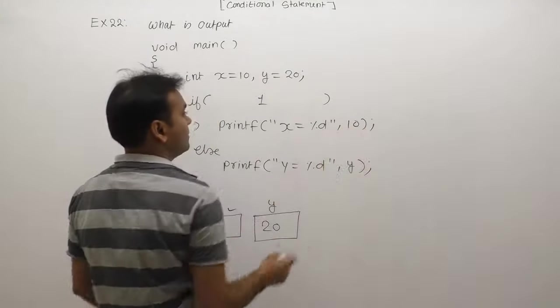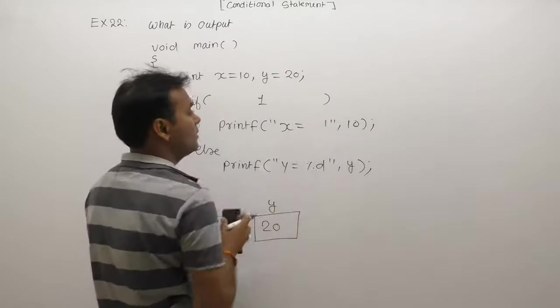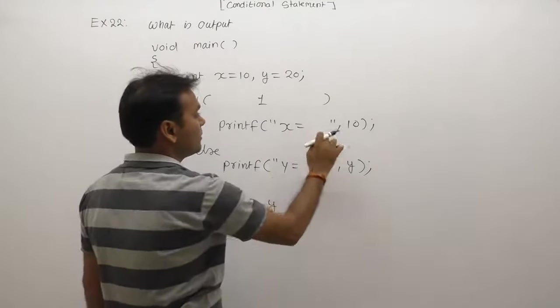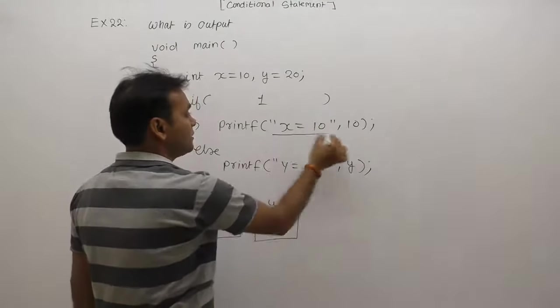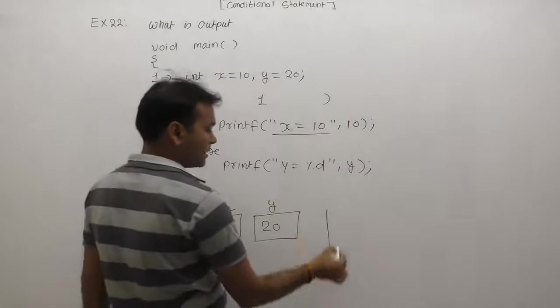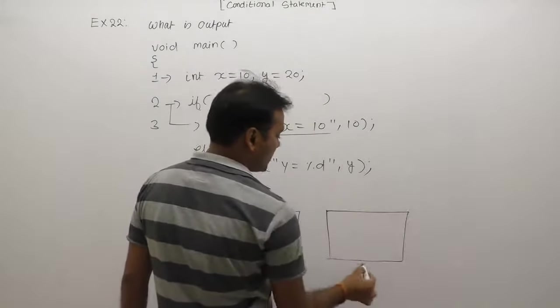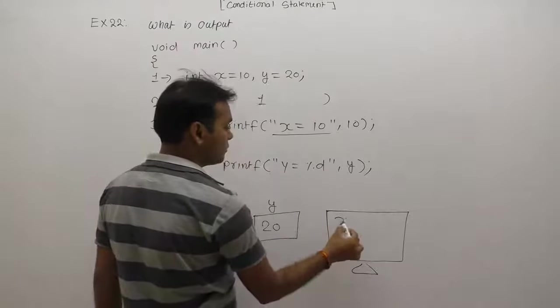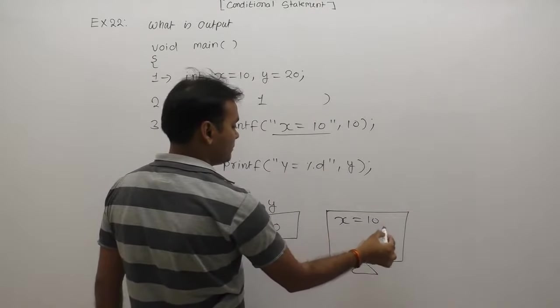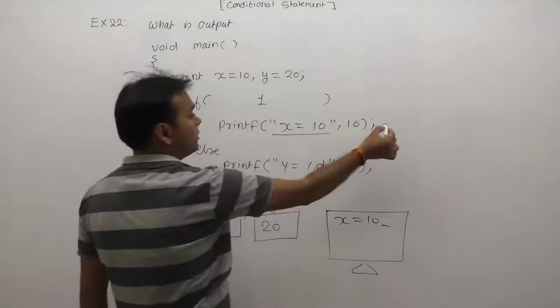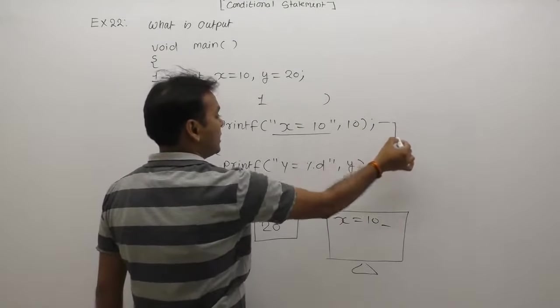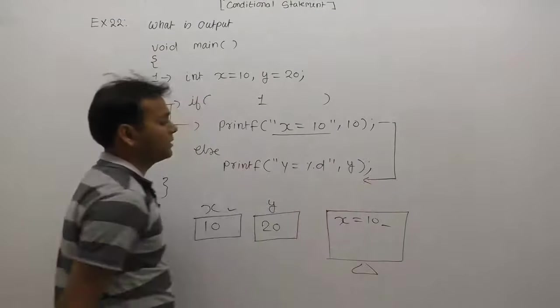At x's place will be replaced with 10. Then instead of %d, display finally the message or output as x equals to 10. Finally 10 prints only, but control goes outside the else body. This is the output.